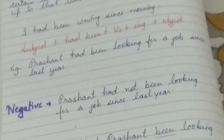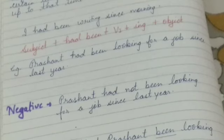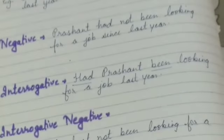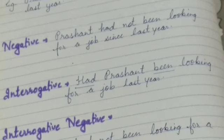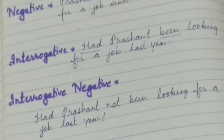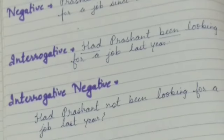For the negative sentence: 'Prashant had not been looking for a job since last year.' Note that 'not' comes after 'had' and before 'been'. For the interrogative sentence: 'Had Prashant been looking for a job last year?' — we write 'had' at the beginning. For the interrogative negative: 'Had Prashant not been looking for a job last year?' — we simply add 'not'. That completes past perfect continuous tense, and with that, past tense is completed.